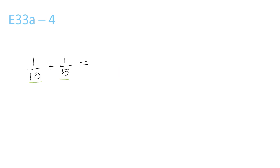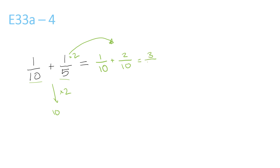10 and 5 — the lowest number that they both go into is 10. 5 times 2 is 10. The 1 over 10 is already over 10, so we just keep it there. Plus this 1 over 5, we have to convert it to something over 10. Remember, 5 times 2 is 10, so we have to do 1 times 2, which is 2. So we get 1 plus 2 is 3 over 10.